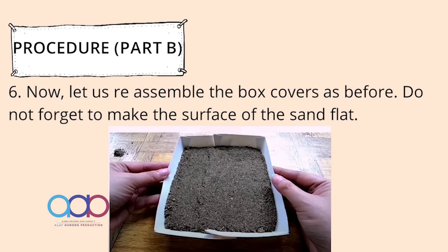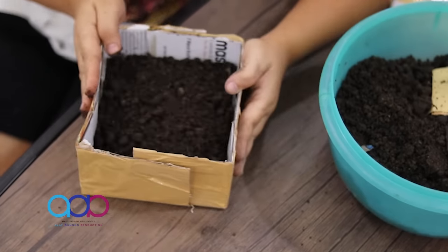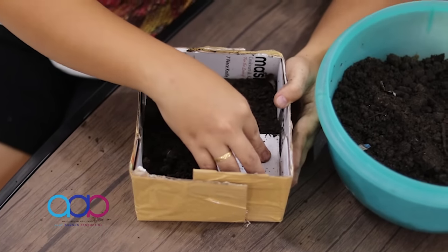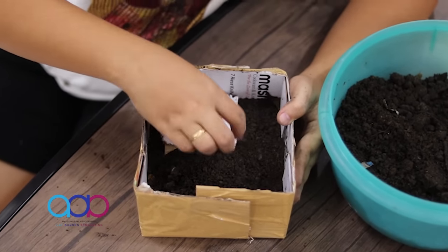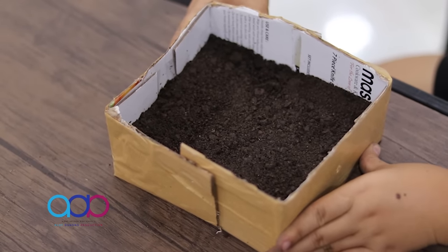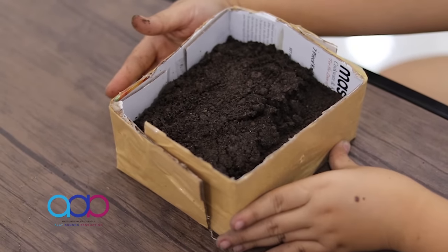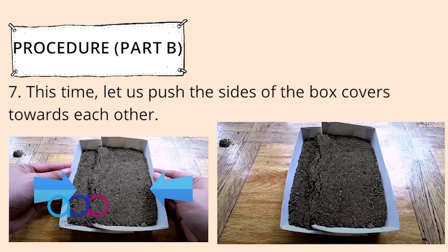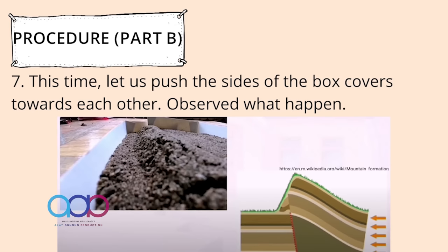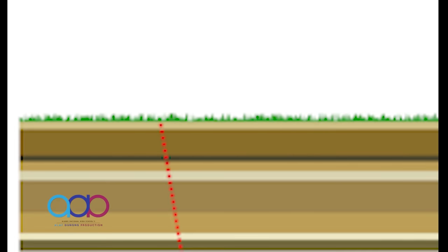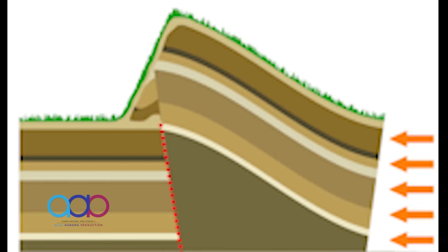Let us reassemble the box covers as before. Do not forget to make the surface of the sand flat. This time, let us push the sides of the box covers towards each other and observe what happens. As we can see, the opposite happens. Instead of the sand sinking, the sand forms a tiny ridge. In the real world, when the ground is squeezed by forces from inside the Earth, a portion of the land is pushed up and mountains are formed.